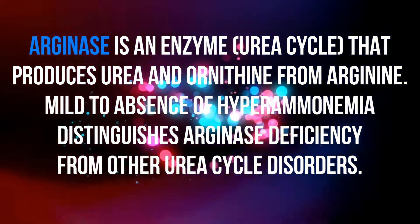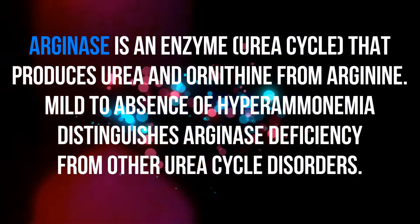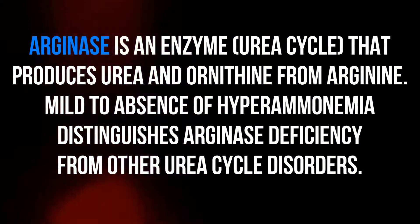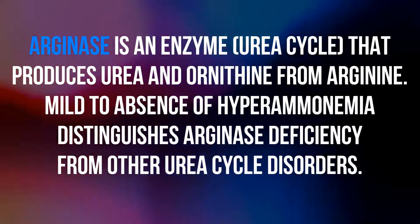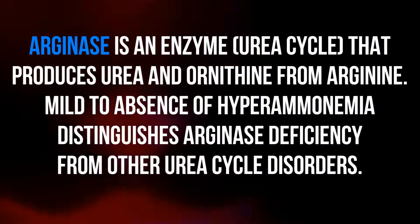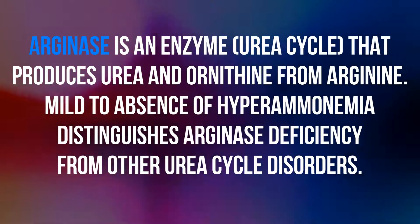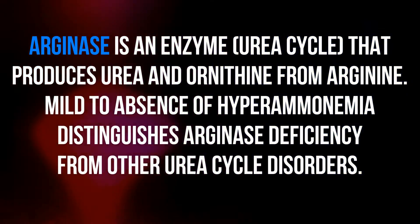Arginase is an enzyme that produces urea and ornithine from arginine. Mild to absence of hyperammonemia distinguishes arginase deficiency from other urea cycle disorders.